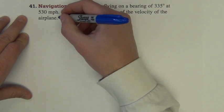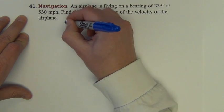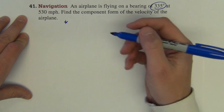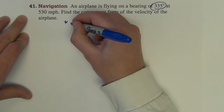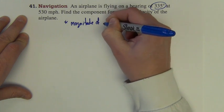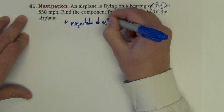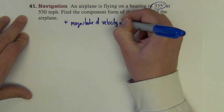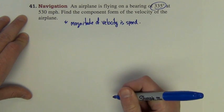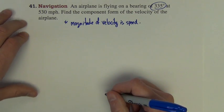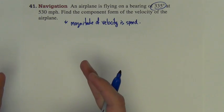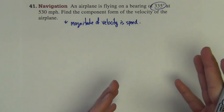Now the magnitude, in order to do a problem, we need to know one thing because we've got an angle theta that will be given to us. We need to know that the magnitude of velocity is speed. Essentially, you always remember the absolute value of velocity is speed.